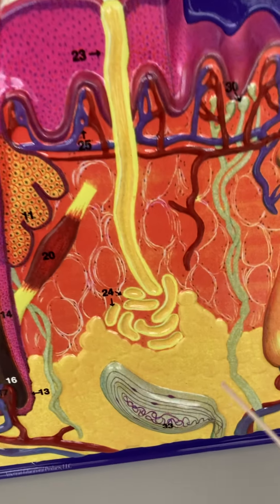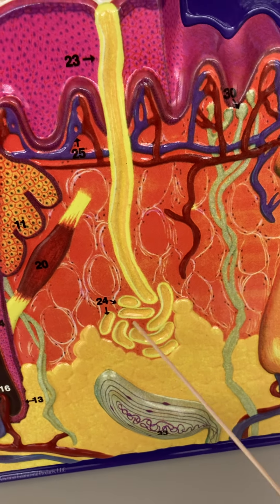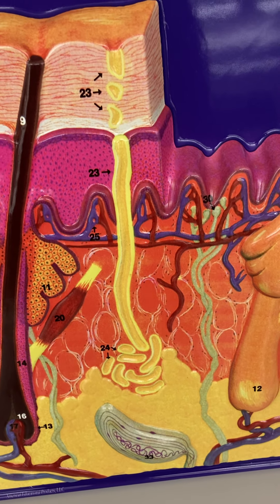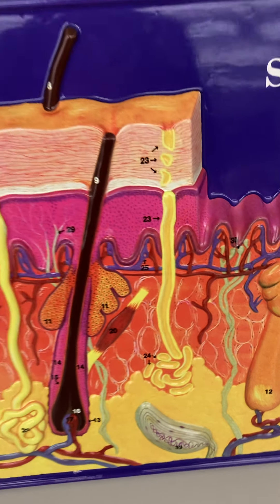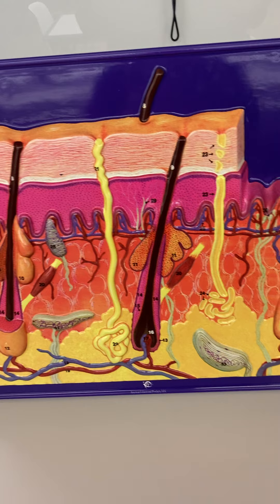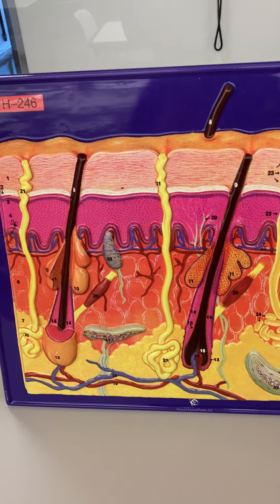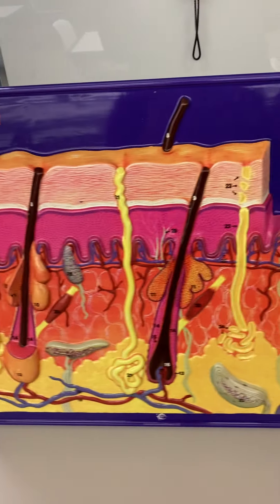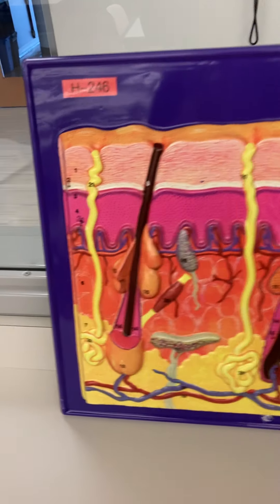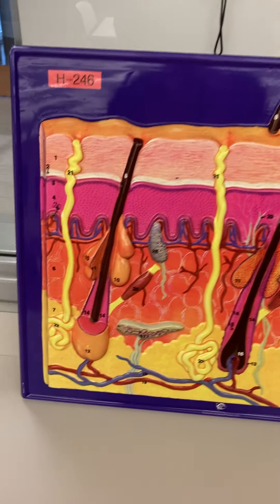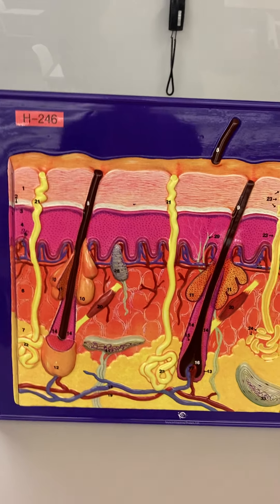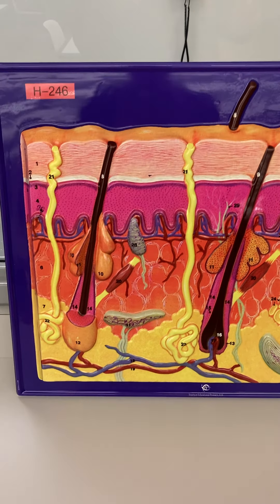In sweat glands — also called sudoriferous glands — if you cut one open you will see lumens, because it's a coiled-up tube. There are two kinds of sweat glands: merocrine and apocrine. These on the purple model are all merocrine sweat glands, because they are not associated with a hair follicle.